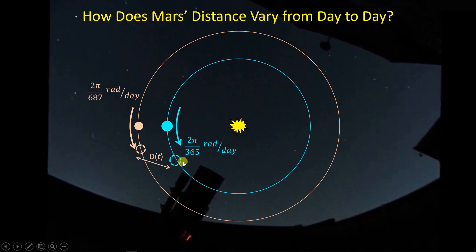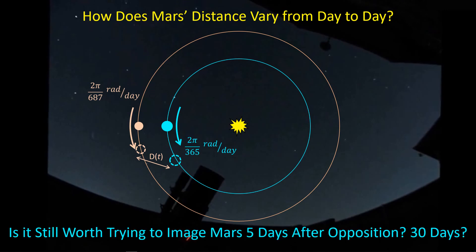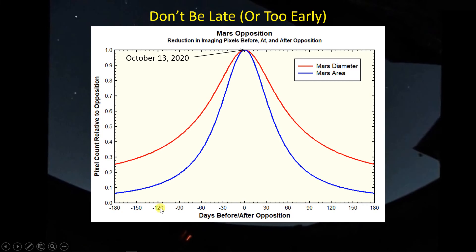The Earth goes around the Sun in 365 days, so that tells us the rate of motion around the Sun for the Earth. Mars has an orbital period of about 687 days. So as time goes by, we're going to be moving a bit faster and getting out further ahead of Mars as it lags behind. The distance between Earth and Mars is increasing from the minimum of 62 million kilometers to some larger distance dependent on elapsed time. Along the horizontal axis are the days before and after opposition — zero represents October 13th, when opposition occurred. The relative pixel count is on the vertical axis, and for pixels across the width of Mars, you look at the red curve.